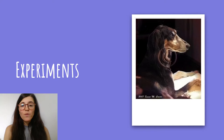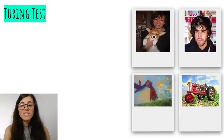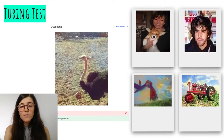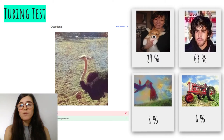We trained the network on the three datasets and then validated the results. The first test was a Turing test, similar to what was done in the original paper. We showed participants real and colorized images to see if they could tell the difference. For the most part, people could identify artificially colorized images, but some images tricked most people — the top two fooled 89% and 63% of participants respectively. On average across benchmark images, about 40% of people thought the colorized images were real.